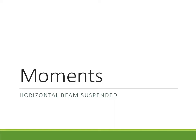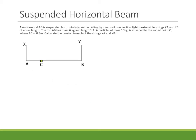On to our second lesson on moments. Last time we looked at a beam that was supported by pivots. This time we're going to look at a combination of pivots and perhaps a few supports from the ceiling that's being suspended. So as an example, here we've got a uniform rod AB. It's suspended horizontally from the ceiling by means of two vertical light, inextensible strings XA and YB.